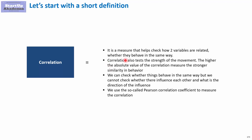Correlation also helps you define the strength of the movement. The higher the absolute value of the correlation, the stronger the similarity in behavior. However, you should bear in mind that correlation does not tell you whether there is an actual connection between those two things. We can check whether they behave in the same manner, but we cannot truly say whether they influence each other, and we cannot say what is the direction of the influence.